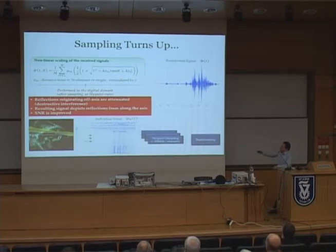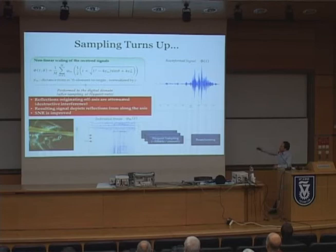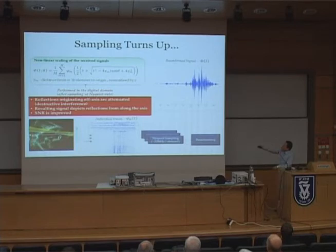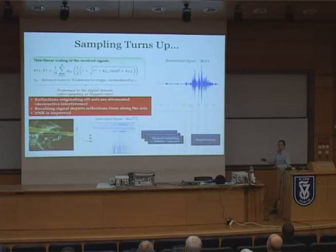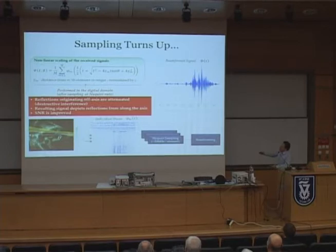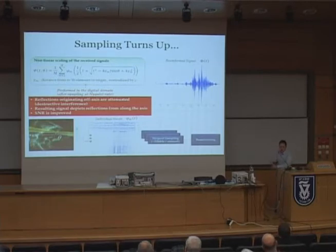The signals phi_m detected by each element have time-varying delays applied to them, which distorts the signals, and then they are averaged — or summed with some weight in a process known as apodization. Although t is a continuous variable, this is done after sampling the signals at high rates. Since such systems are confined to classic Nyquist sampling theory, these are rates of about 20 MHz, which is twice the baseband bandwidth of the signals. The whole calculation is then done digitally, ultimately enhancing the SNR and attenuating off-axis reflections.